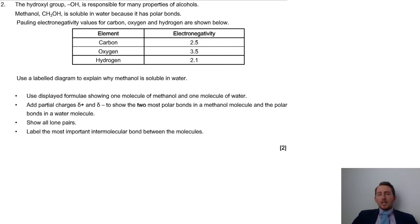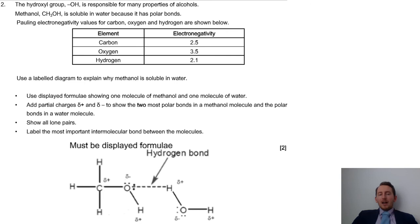And the final question here has a lot of information. It gives us some electronegativity values and talks about methanol being soluble in water because of its polar bonds. So what it's asked us to do is to draw a labeled diagram to explain why methanol is soluble in water, and you've got all those bullet points there showing what you have to show on your diagram. Make sure they're quite particular. It's only worth two marks and there's four points there. You have to make sure you've got the displayed formula, partial charges, lone pairs, intermolecular forces - everything going on there.